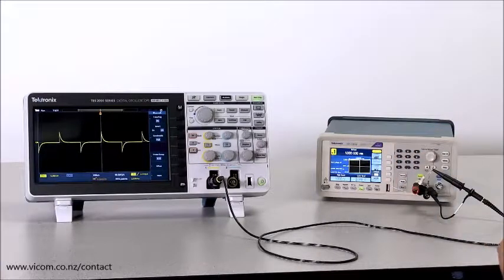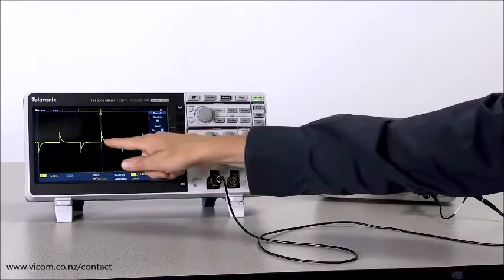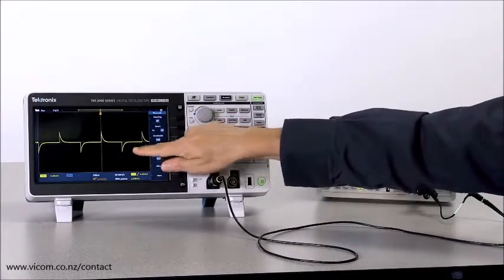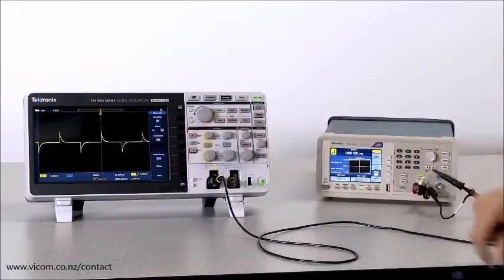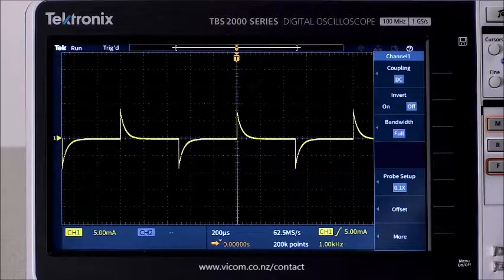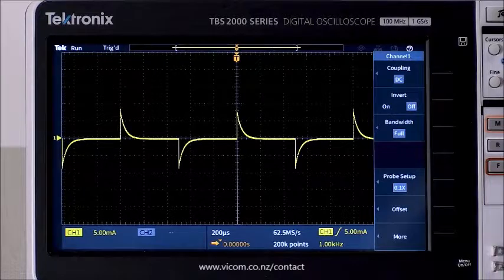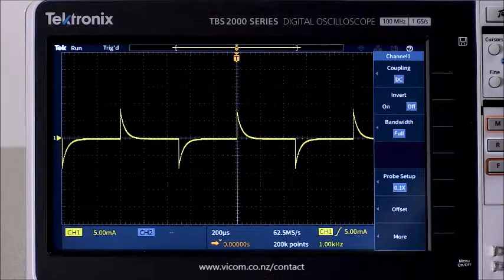I'm driving the circuit with a positive pulse. You can see the charging current when the pulse goes high, and you can see the discharge when the pulse goes back to zero. Now we can use the area measurement to integrate the current and determine how much charge is stored in the capacitor.